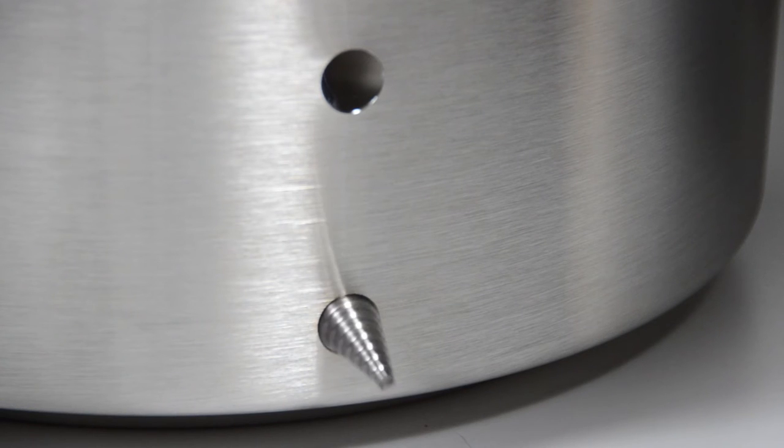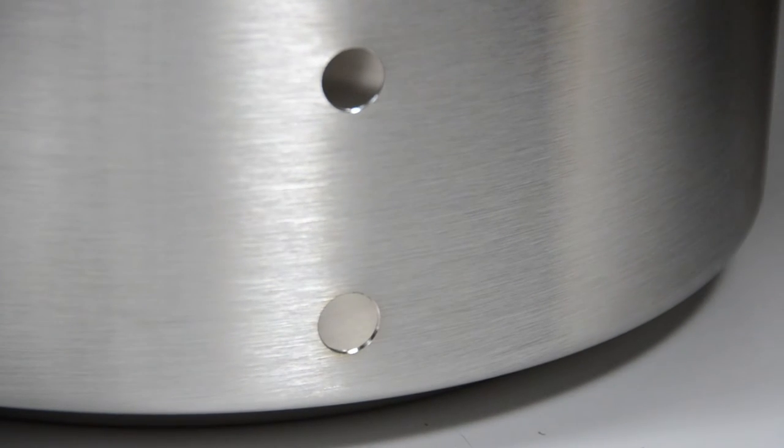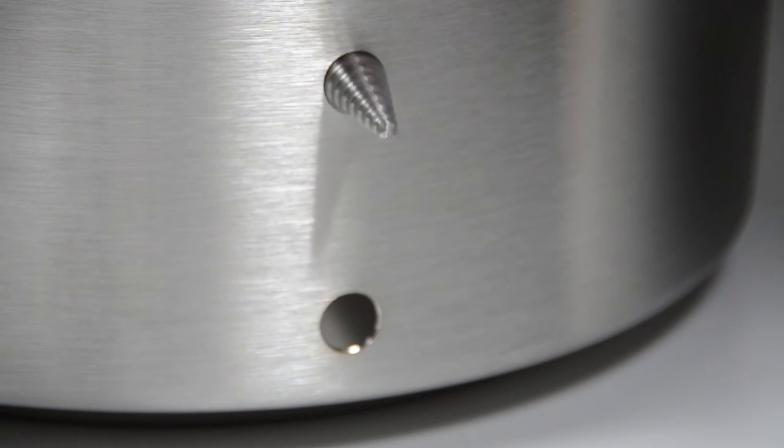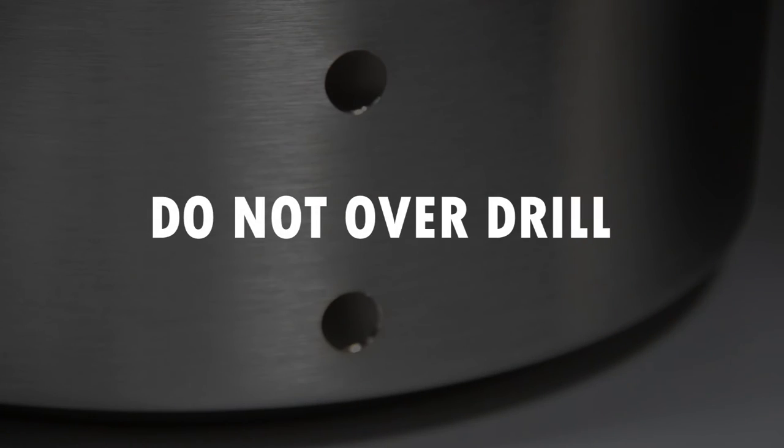You can use the step drill at very low speeds from the inside of the kettle with light pressure to remove the burr. Do not over drill.